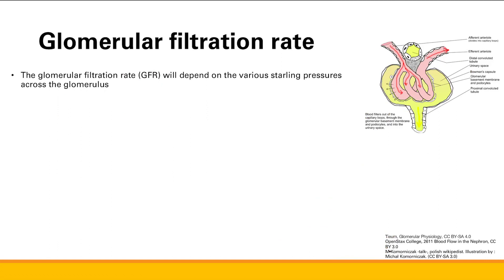Now we're going to talk about the rate of filtration — how does it vary and how is it controlled? It depends on the various Starling pressures across the glomerulus. Remember there are hydrostatic pressures and oncotic pressures, which can act either in the capillaries or in Bowman's space.